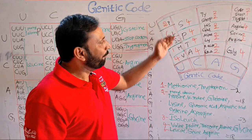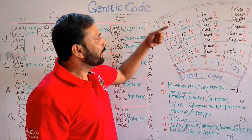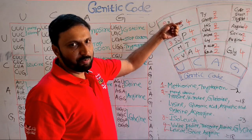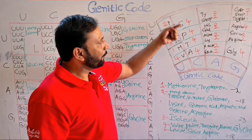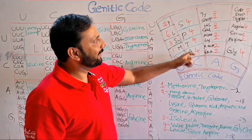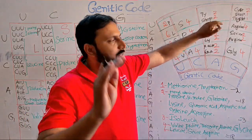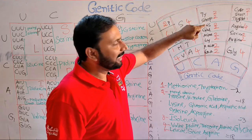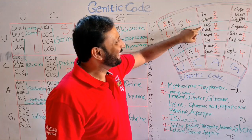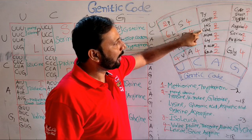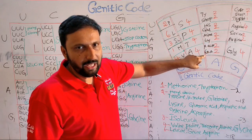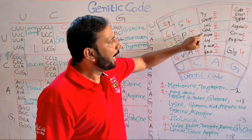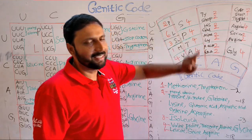The code is PLIMV: phenylalanine, leucine, isoleucine, methionine, valine. SPTA for the second row: serine, proline, threonine, alanine. Then TYRO — stop codons, count 2. Then 'he is glamorous' — histidine, glutamine. When there is glutamine, there is glutamic acid. When there is asparagine, there is aspartic acid. In between asparagine and aspartic acid, lysine.